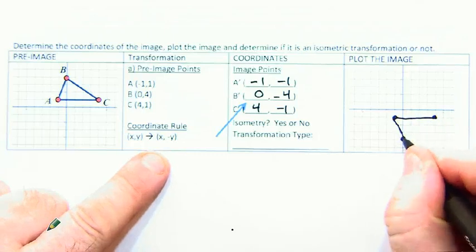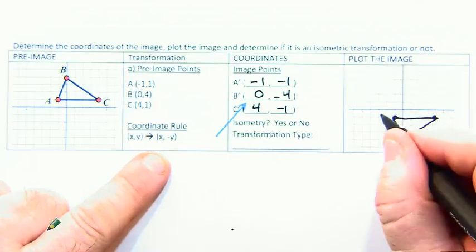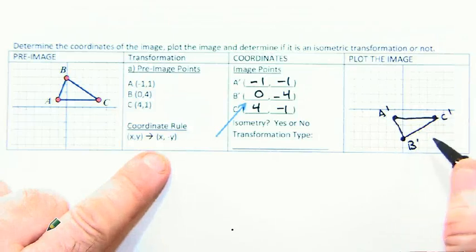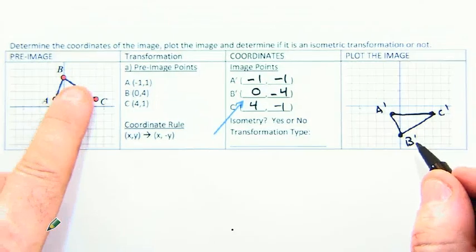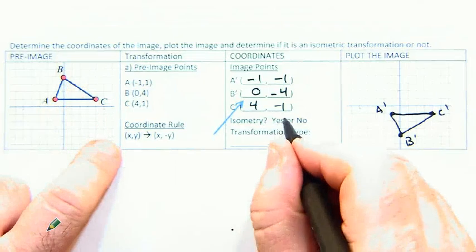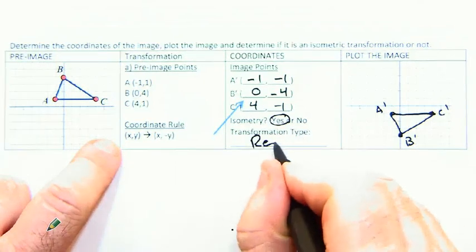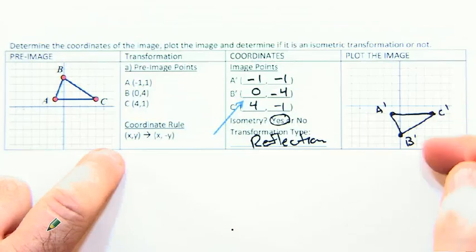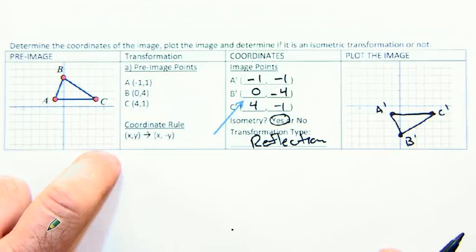And we create a new shape. Here is our A prime, our C prime, and our B prime. Now, when we look back on the original, we can see that that was simply—well, it is isometric first. And we can see that it is a reflection that has taken place in that coordinate rule. So it is isometric.